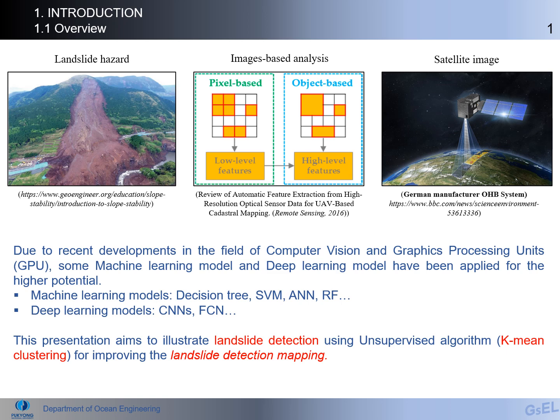Due to recent developments in the field of computer vision and graphics processing units, some machine learning models and deep learning models have been applied for higher performance potential. Machine learning models like decision tree, support vector machine, and random forest, and deep learning models like CNN and FCN have been used.